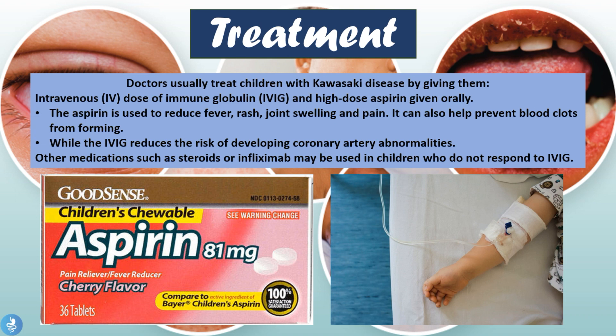Doctors usually treat children with Kawasaki disease by giving them intravenous doses of immunoglobulin, or IV IG, along with high-dose aspirin given orally. The aspirin is used to reduce the fever, rash, joint swelling, and pain, and can also help prevent blood clots from forming. IV IG reduces the risk of developing coronary artery abnormalities. Other medications such as steroids or infliximab may also be used in children who do not respond to IV IG.